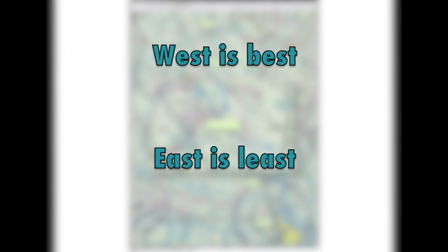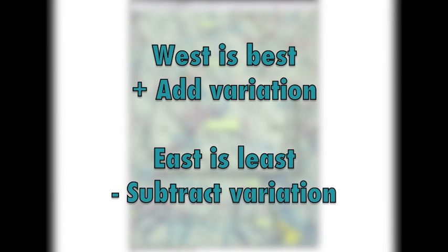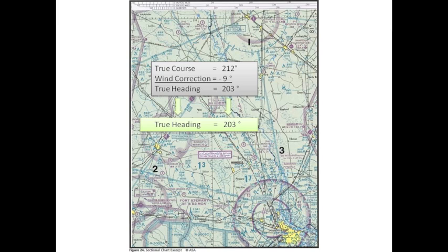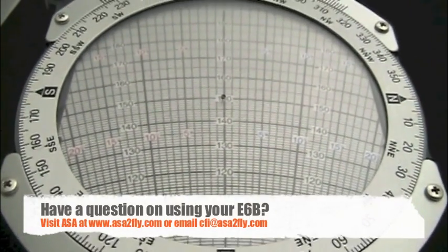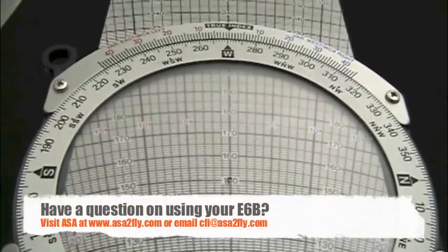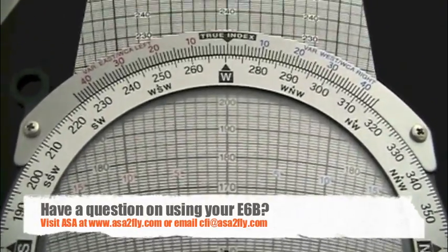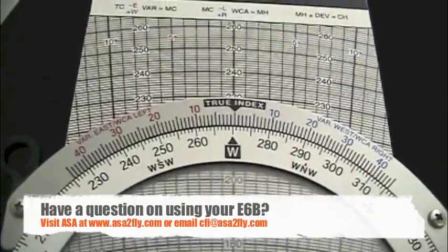When a westerly variation is indicated, it must be added to the true heading. When an easterly variation is indicated, it must be subtracted. A true heading of 203 degrees plus a westerly variation of 5 degrees results in a magnetic heading of 208 degrees.